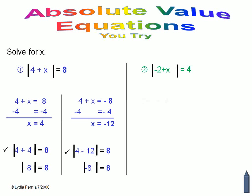In problem number two, the first setup is negative two plus x equals positive four. You solve for x, and x equals six.